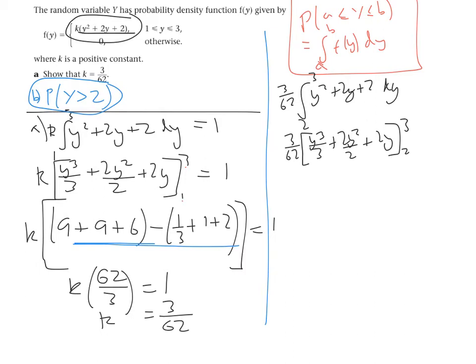I'm going to substitute in both limits now. So when we substitute in 3, we should get the same as before, 9 plus 9 plus 6. And then we're going to take away 8 over 3 plus 8 over 2 plus 4.